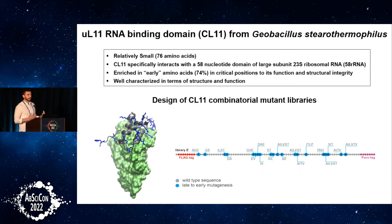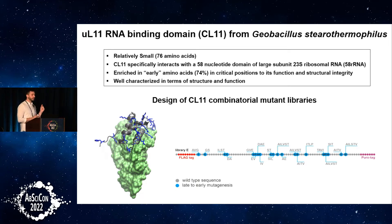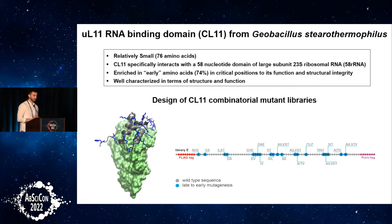How did we verify this hypothesis? First, we selected a template RNA-binding protein and created a library where all the late amino acids were substituted with early amino acids. So we have a protein composed of only early amino acids, and we try to understand if it's still able to bind RNA. The target we selected was the C-terminal domain of ribosomal protein L11 from Geobacillus stearothermophilus — a small domain of 80 amino acids, which was already more than 74% early amino acids, and whose RNA target is well characterized.